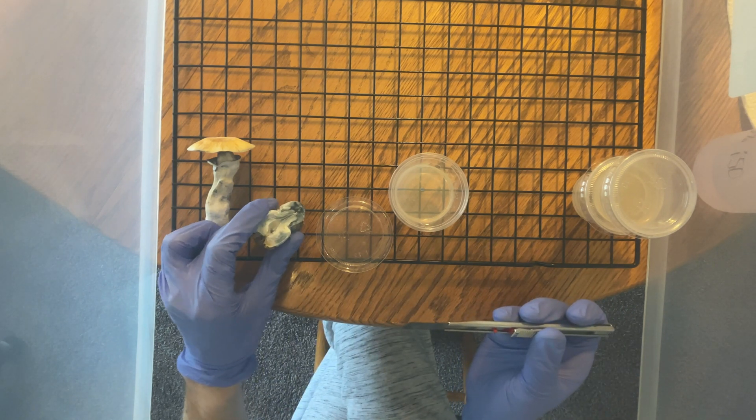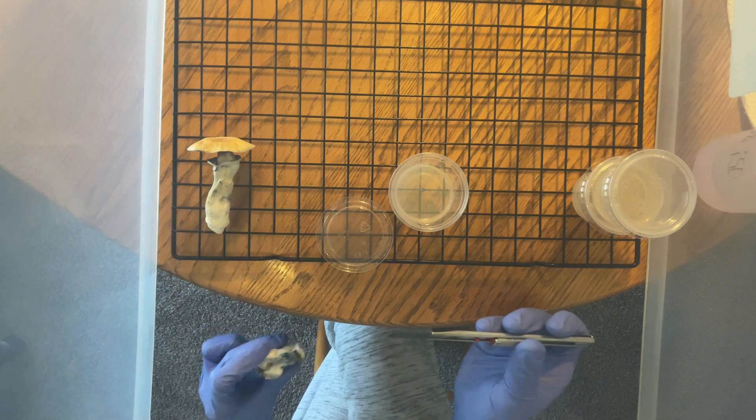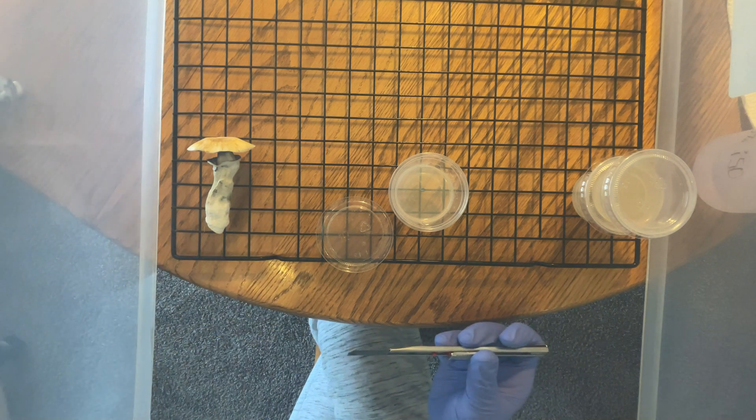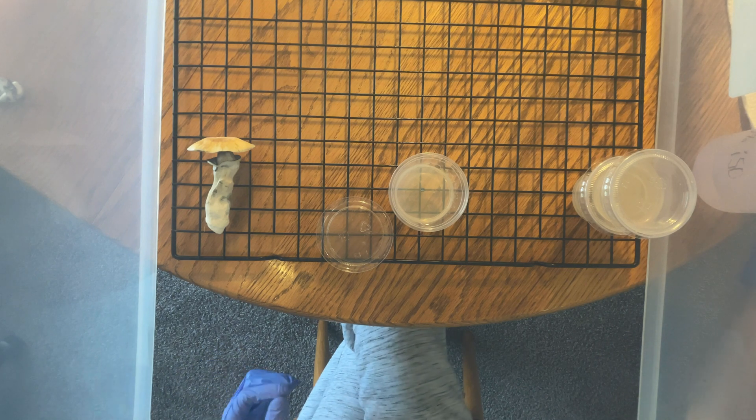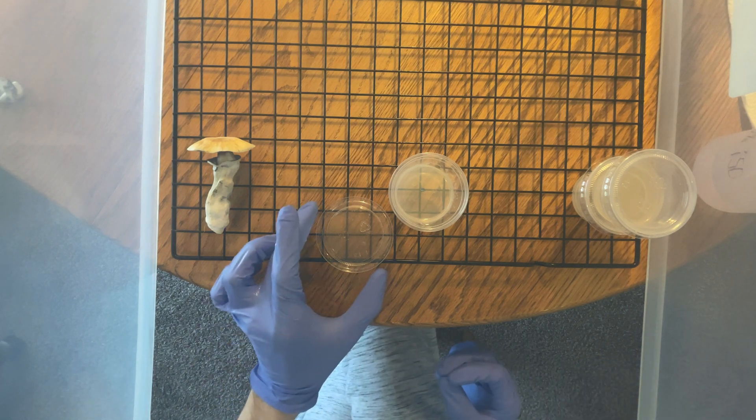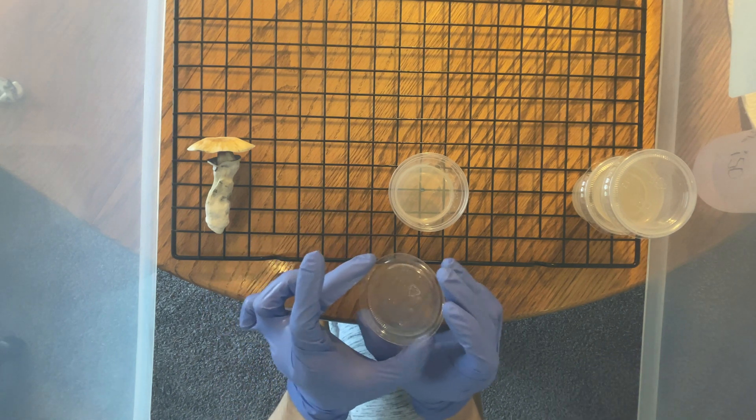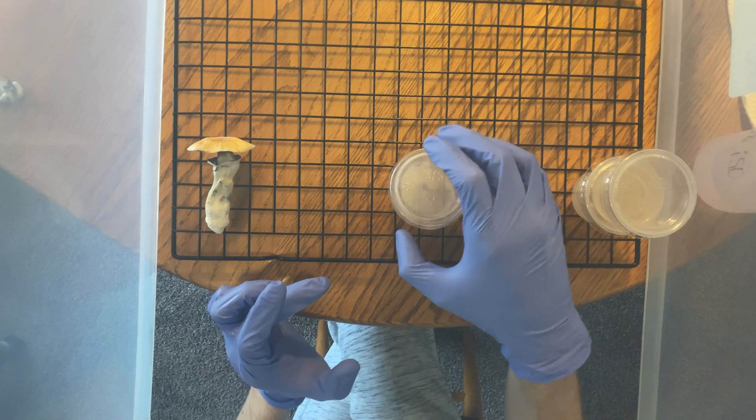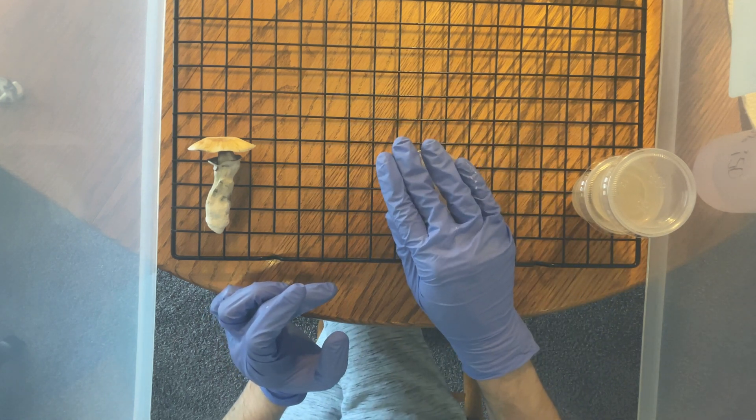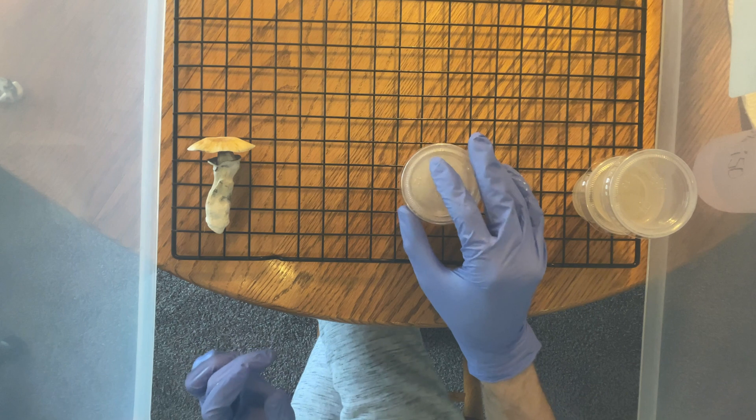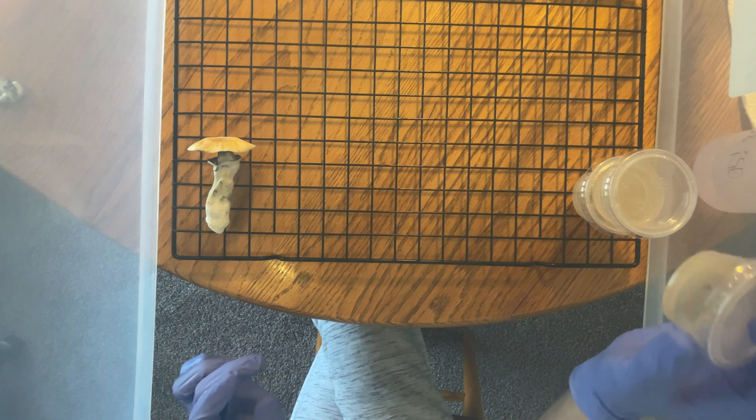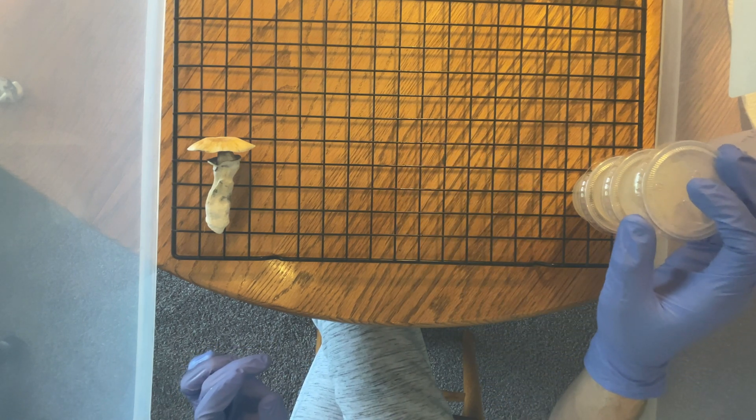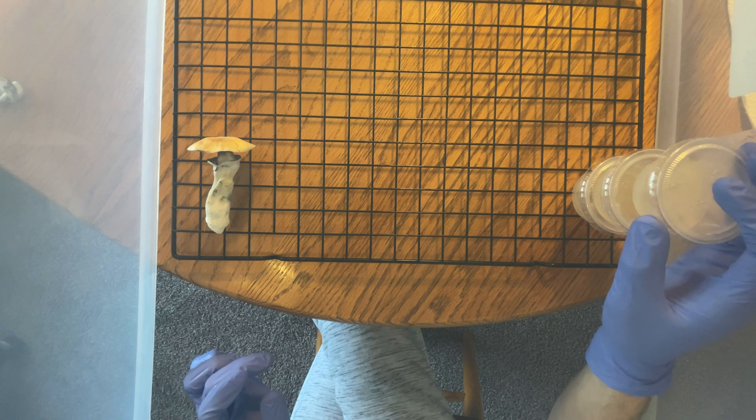I'm also taking my fruits out of the bin, just so that I have a little bit more of a work area for my next fruit. Lid back on. And now I'm just kind of trying to figure out an order for my plates, just so I don't get mixed up since they're not going to be labeled.